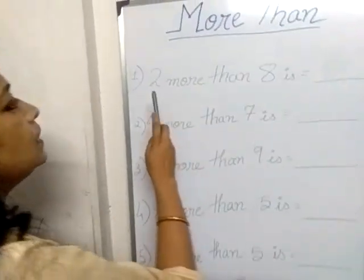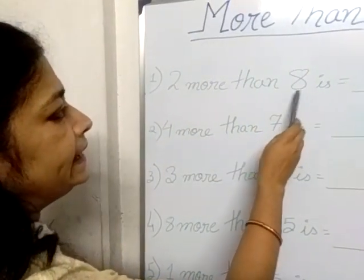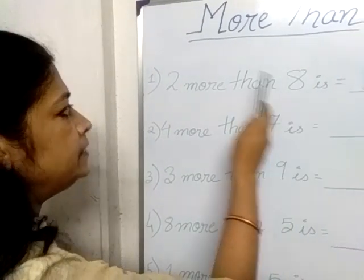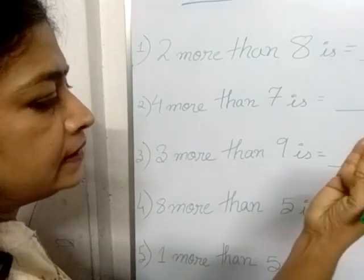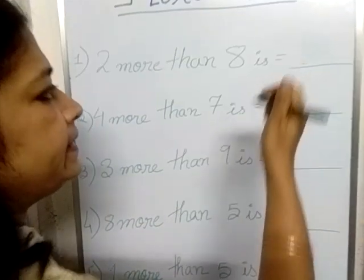2 more than 8 is means 8 plus 2. 8 plus 2, 9, 10. You write here 10.